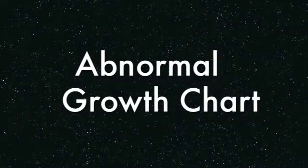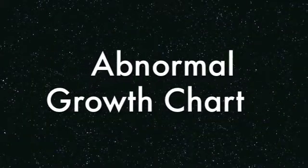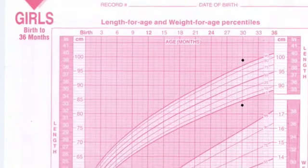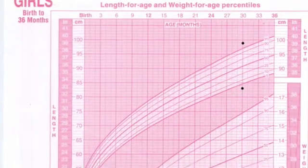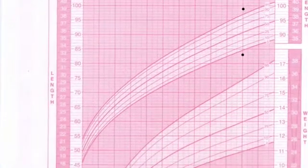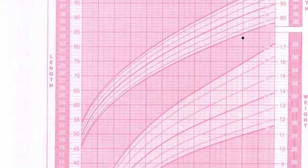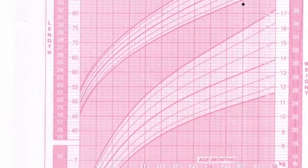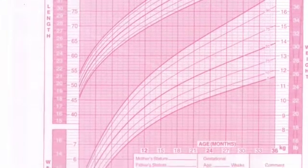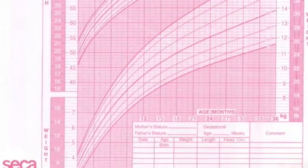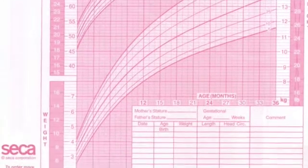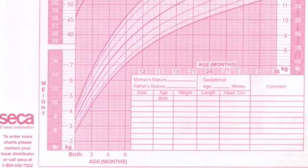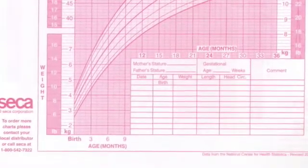Next, we are going to show you an example of an abnormal patient's growth chart. As you can see, the points for both height and weight fall outside of normal range, that being the darker colored area on the chart. This can mean a patient is either overweight or underweight, depending on where the points are plotted on the chart.